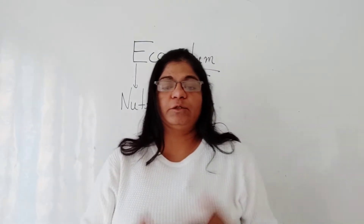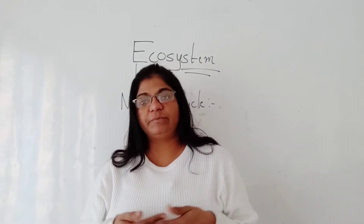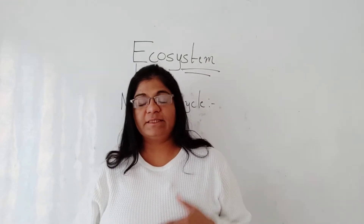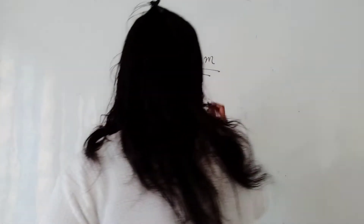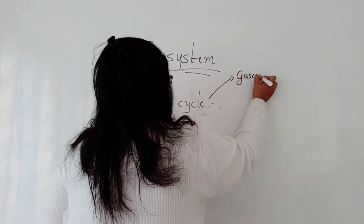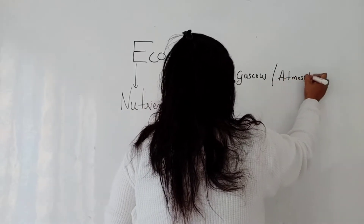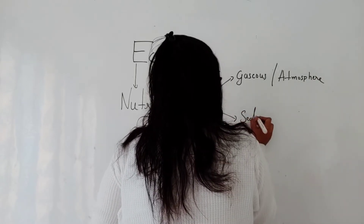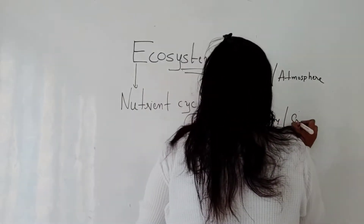The movement of elements through biotic and abiotic components of an ecosystem is called the nutrient cycle. There are two types of nutrient cycles: gaseous and sedimentary. The gaseous cycle is present in the atmosphere, and the sedimentary cycle is present in the crust of the earth.